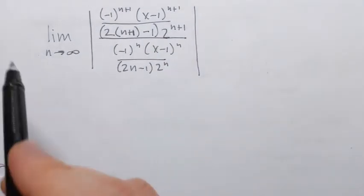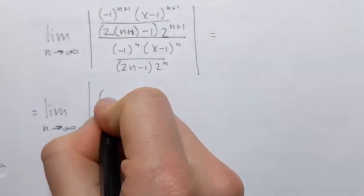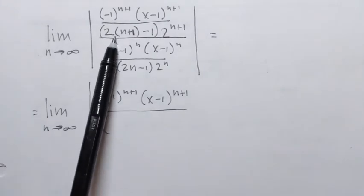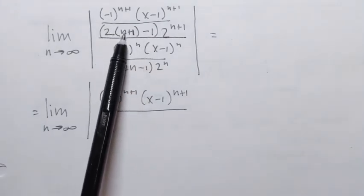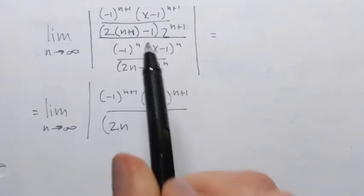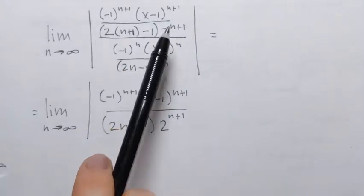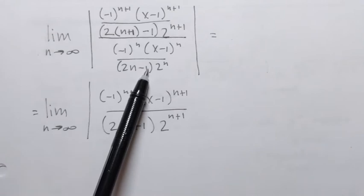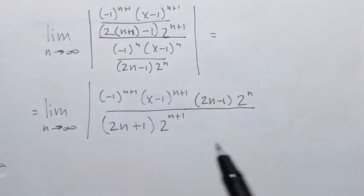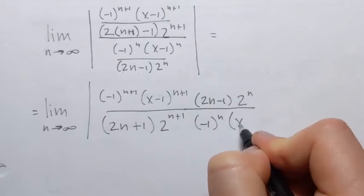Next I simplify the expression inside the absolute value by rewriting the complex fraction as a product. Distributing the 2 gives 2n plus 2 minus 1, which is 2n plus 1, and then 2 to the power n plus 1. I multiply by the reciprocal of the denominator, so 2n minus 1 and 2 to the power n come to the numerator, while negative 1 to the power n plus 1 and x minus 1 to the power n plus 1 go in the denominator.